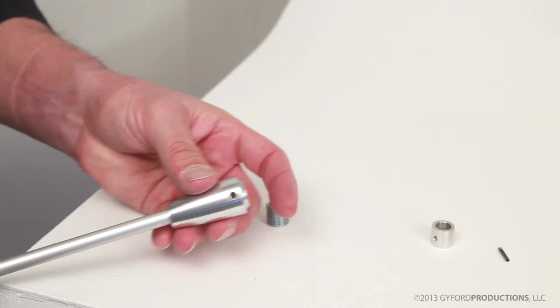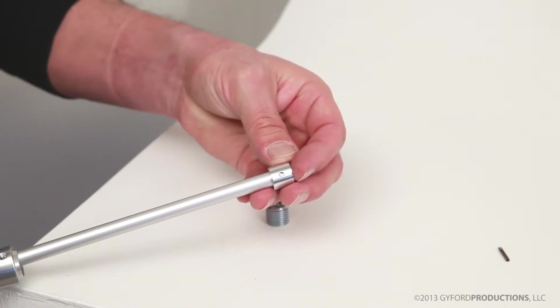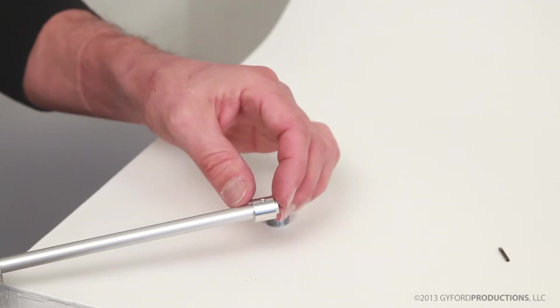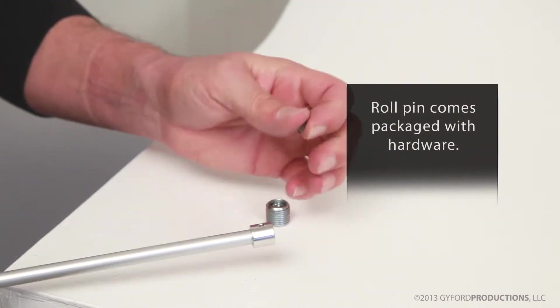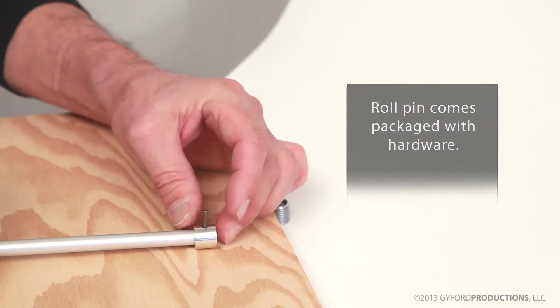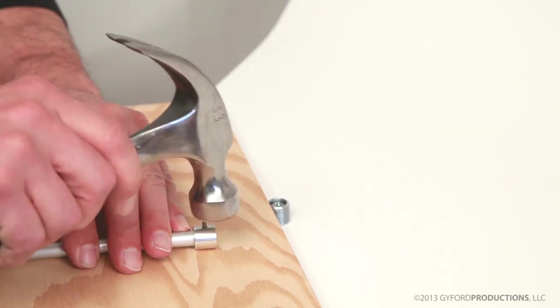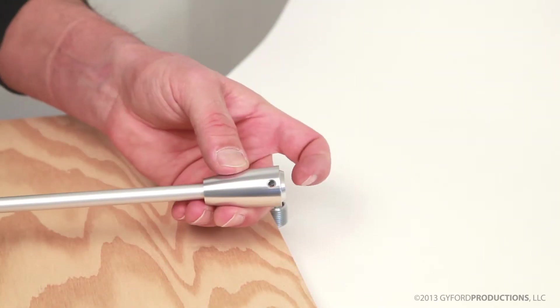Take the turnbuckle body and slide it on. Then we're going to take this collar and line these two holes up. This is where the pin comes in. Get a block of wood again, because we're going to have to strike this. This is a very strong connection.